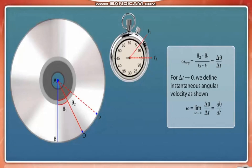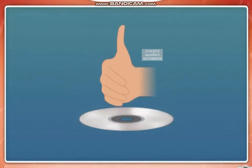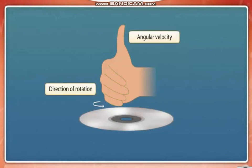For very small interval of time, we define the instantaneous angular velocity as shown. The direction of angular velocity is given by the right-hand thumb rule. If we curl the fingers of our right hand along the rotating body, pointing in the direction of rotation, then the extended thumb points in the direction of angular velocity.